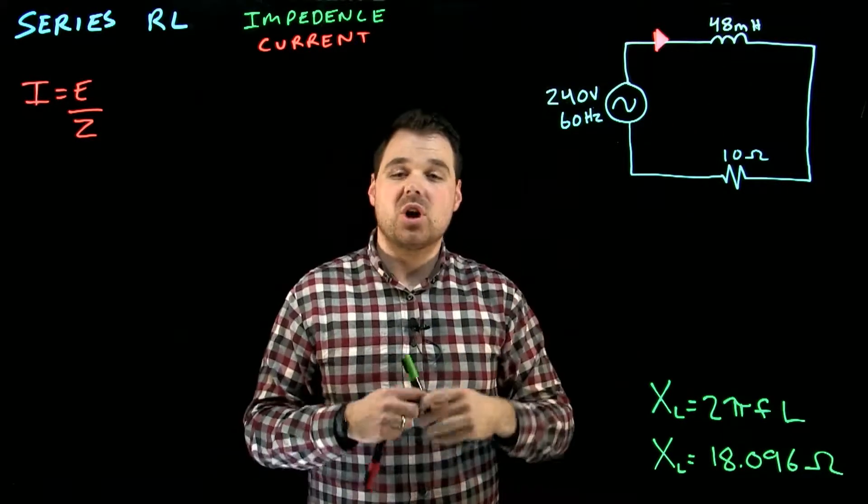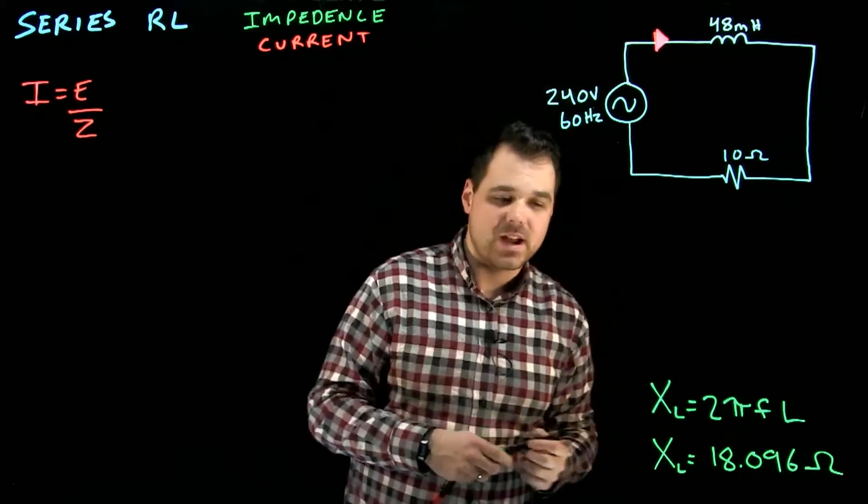Voltage and current on an inductor are 90 degrees out of phase. So we see that XL also at a 90 degree angle.